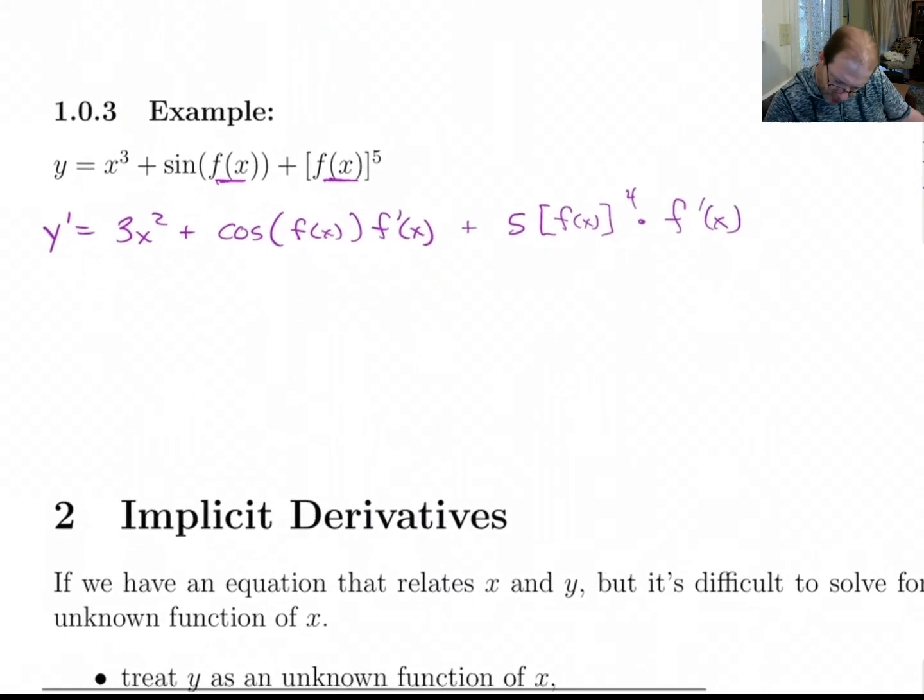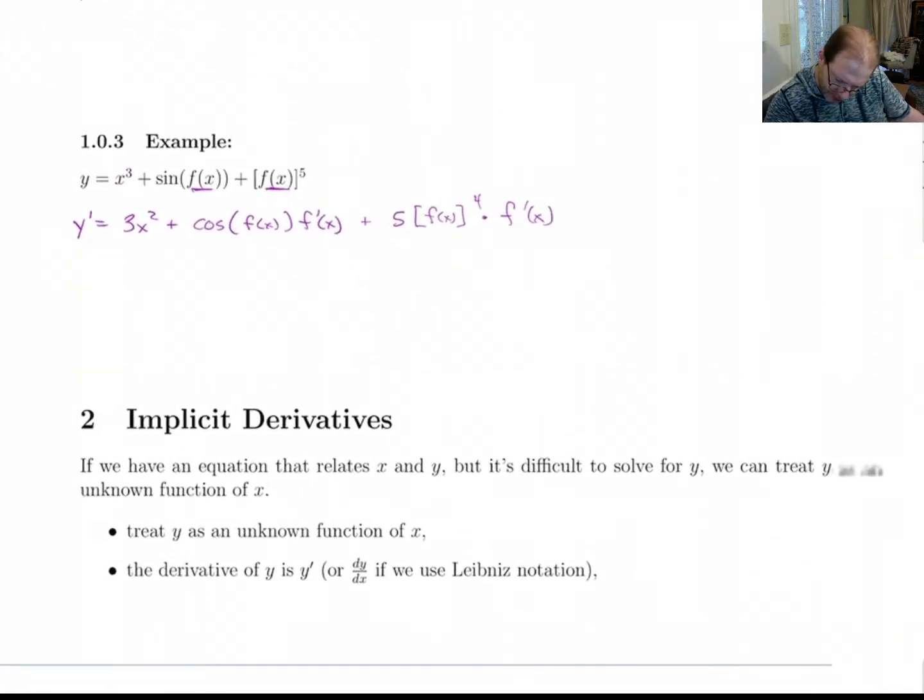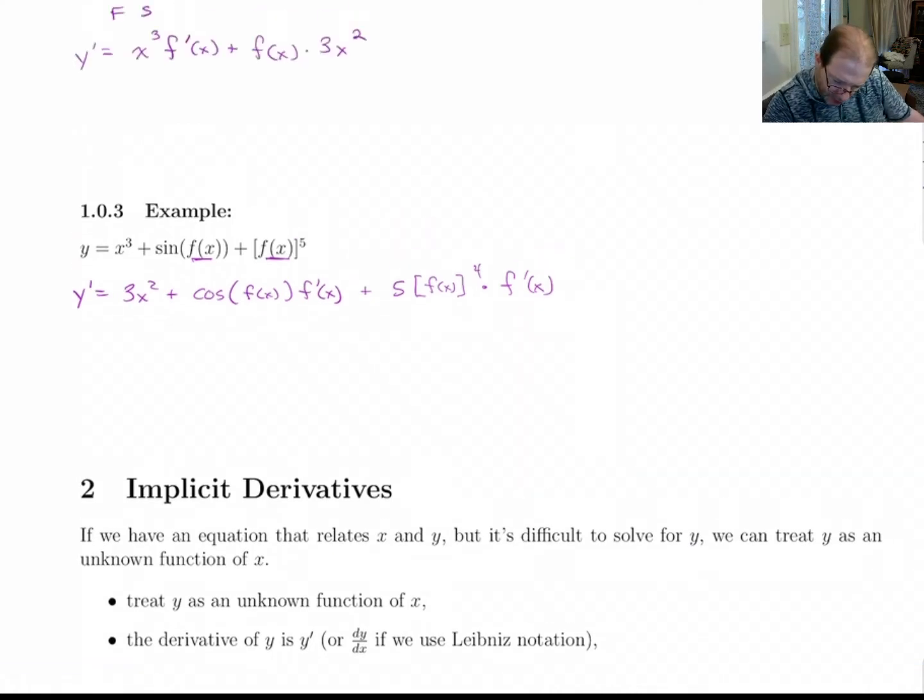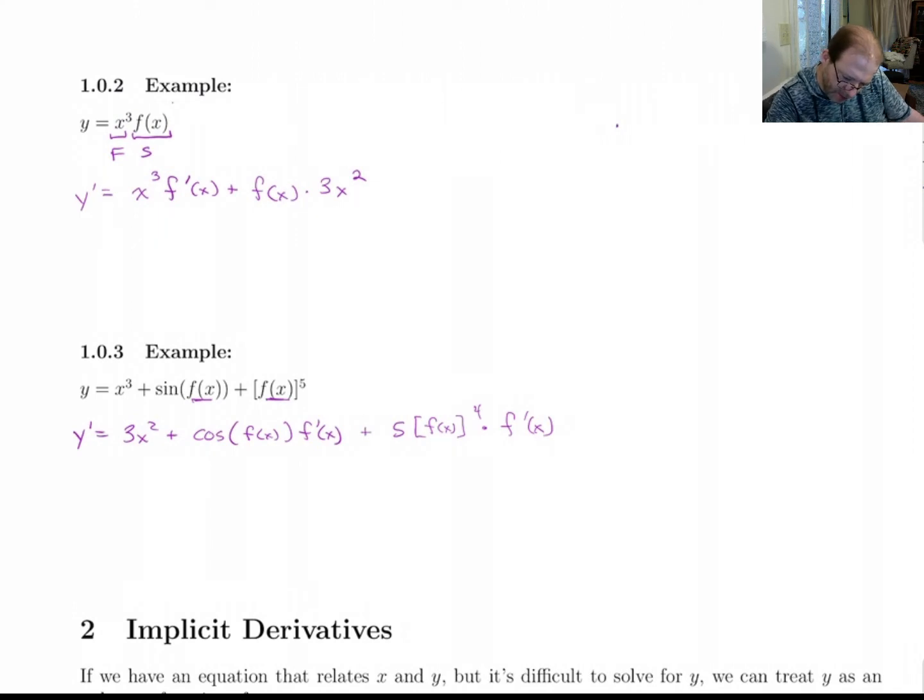Now what does this have to do with implicit derivatives? Well, implicit derivatives, you use those in this sort of situation. If you have an equation that relates x and y, but it's difficult to solve for y, you can treat y as an unknown function of x. So just for fun, let's go back up here and look at this one. Let's say that this f(x) here, let's say that y was actually equal to f(x).